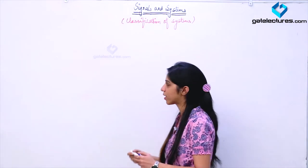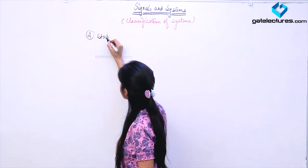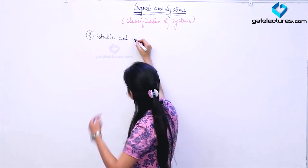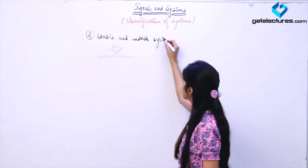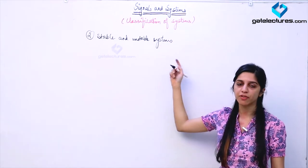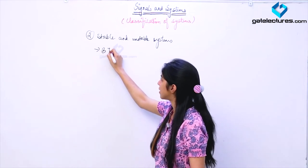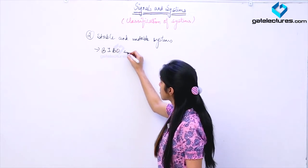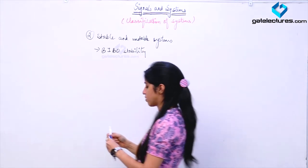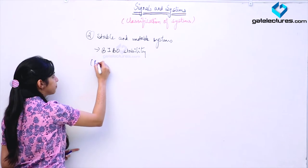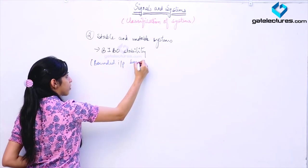The next classification we are looking at is stable and unstable systems. There are various criteria to describe and justify the stability of a system. The criteria that we are using here is BIBO stability — Bounded Input, Bounded Output.